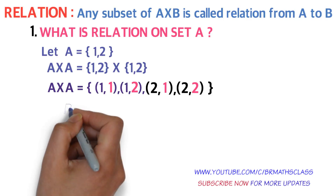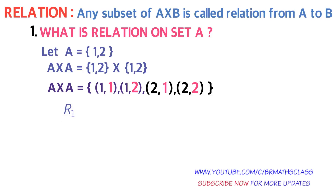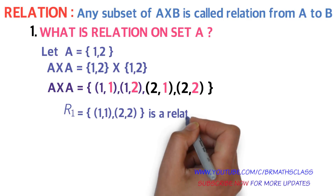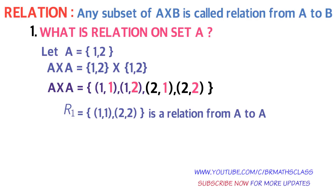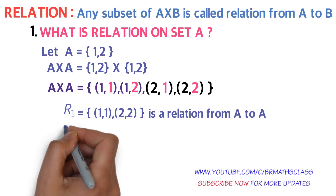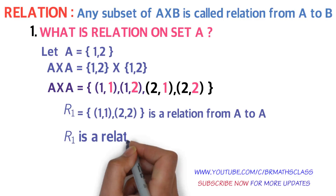Now I will consider a set R1, which contains two elements: ordered pair (1,1) and ordered pair (2,2). Observe that R1 is a subset of A×A — ordered pair (1,1) is in A×A, and ordered pair (2,2) is in A×A. So R1 is a subset of A×A, and we say R1 is a relation from A to A. Simply, we say R1 is a relation on A.